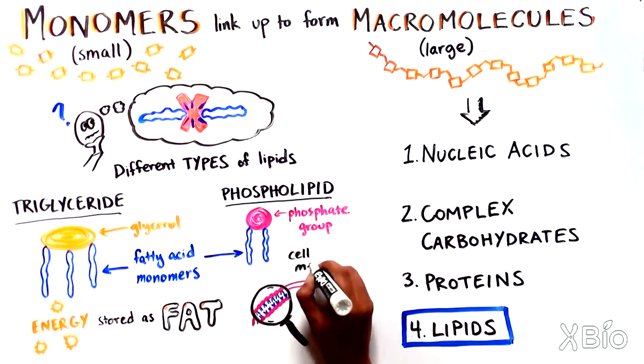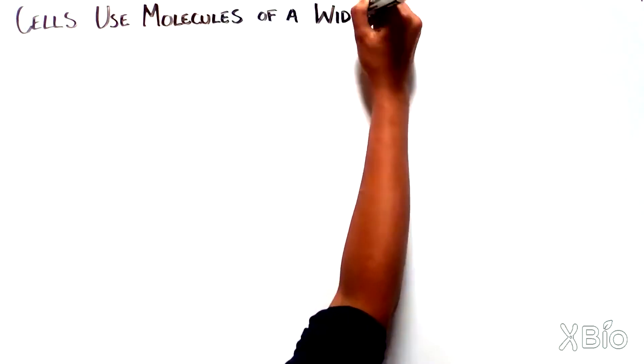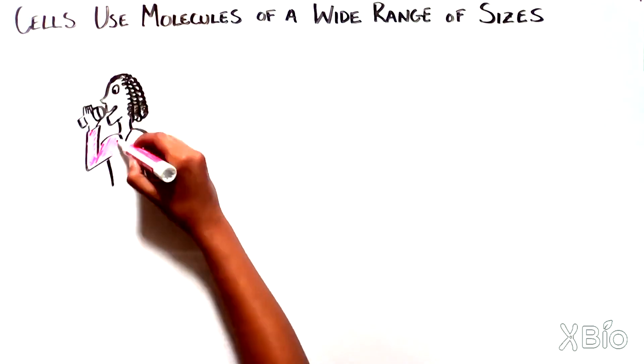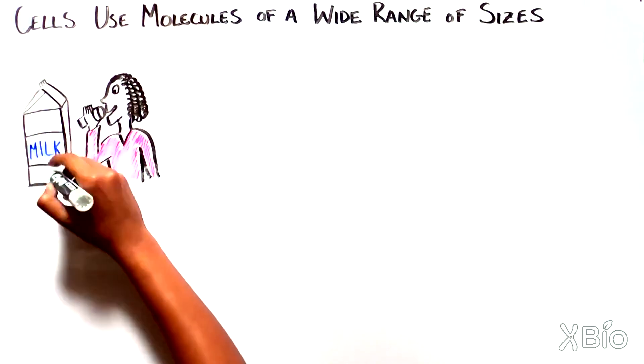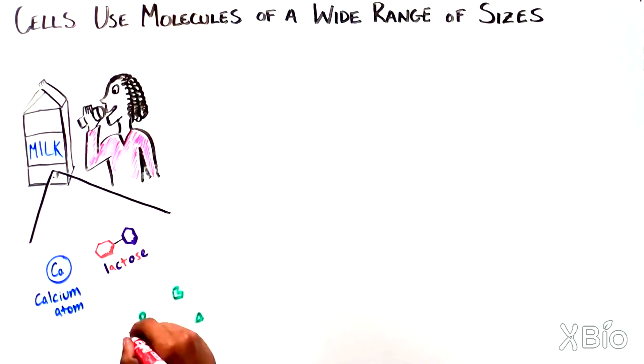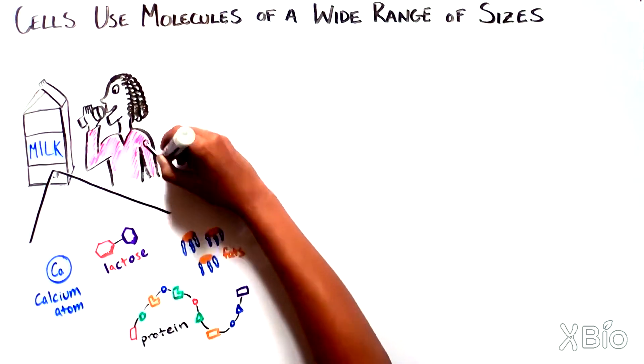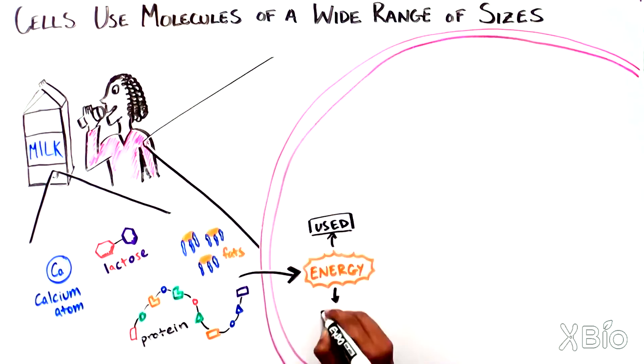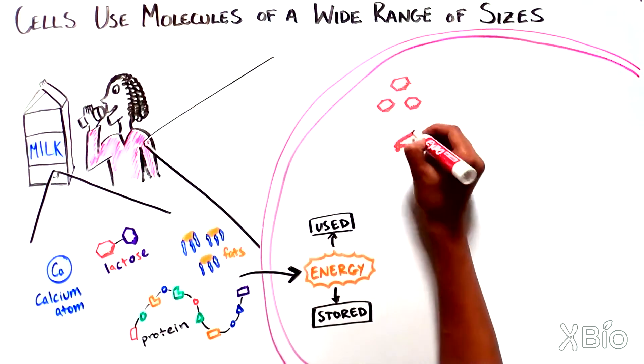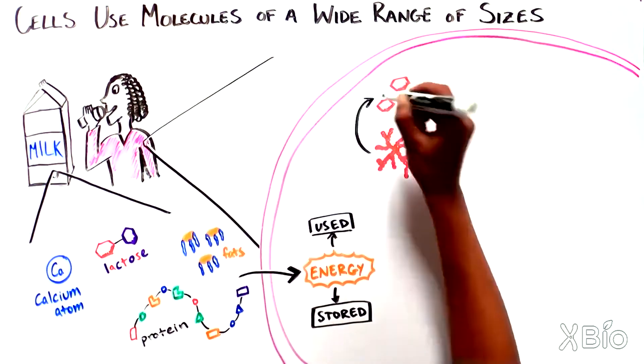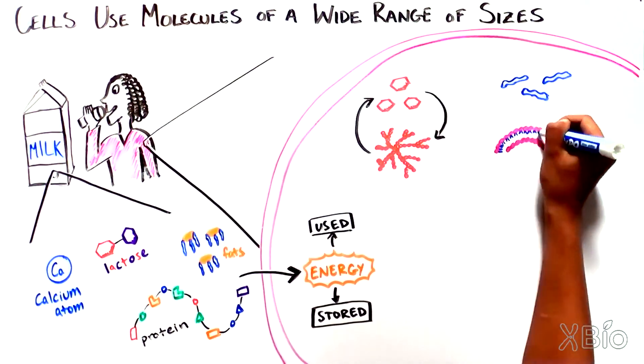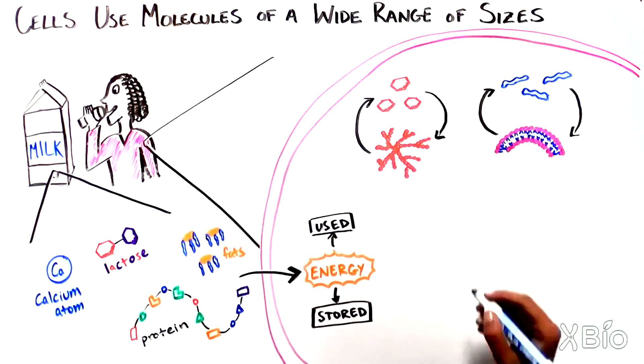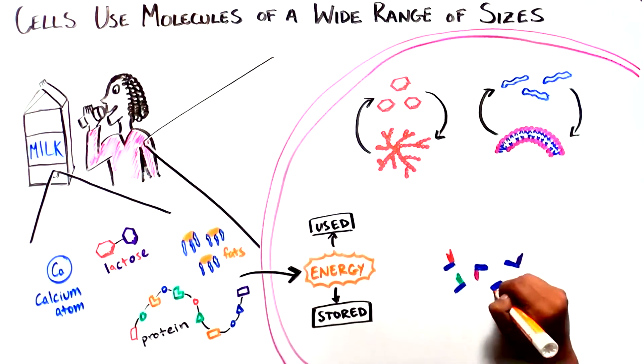You can see that our cells use molecules of a wide range of sizes. We can get a lot of these from our diet. A big glass of whole milk contains calcium, an atom, lactose, a disaccharide or simple sugar, proteins, and fats. Our cells can take the simpler molecules and use them for energy right away, or can break them down into smaller pieces. Just like when you disassemble a Lego house you've made, the individual Lego pieces can then be used in a whole new construction. For our cells, this means assembling new macromolecules.